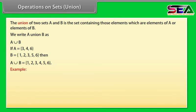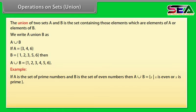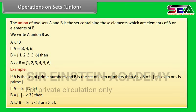Example. If A is the set of prime numbers and B is the set of even numbers, then A union B equals X such that X is even or X is prime. If A union B equals X such that X greater than 5, and B equals X such that X less than 3, then A union B equals X such that X less than 3 or X greater than 5.